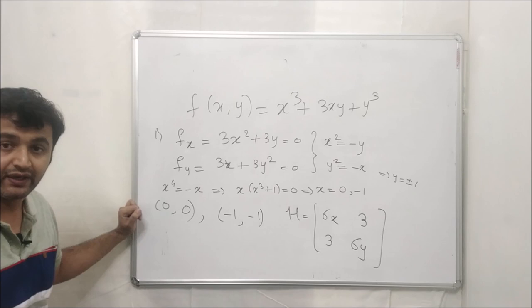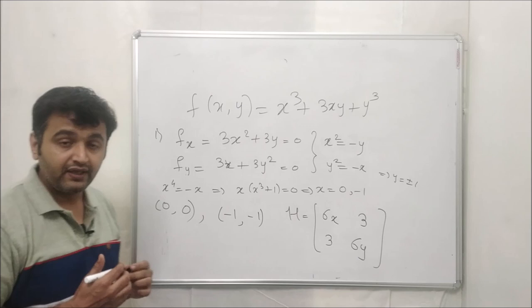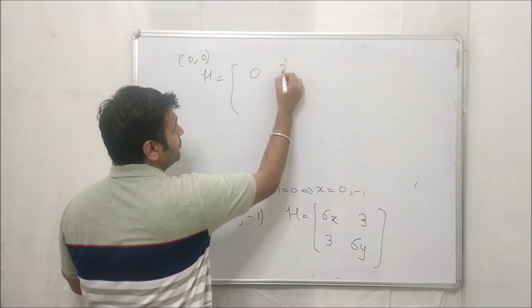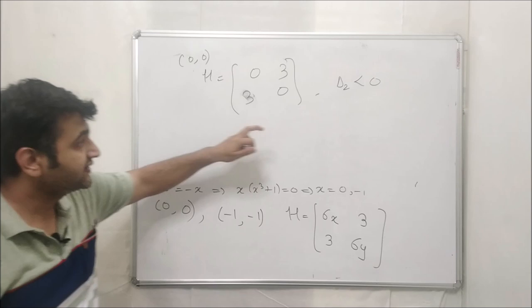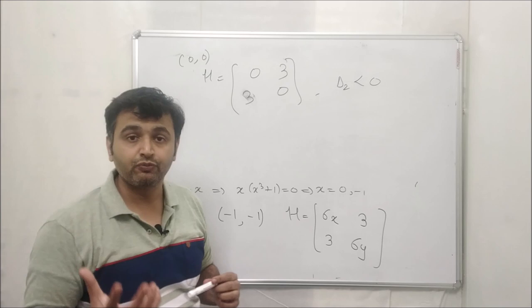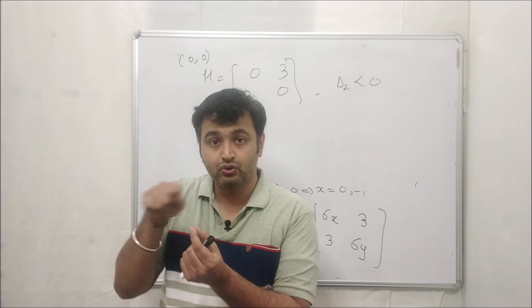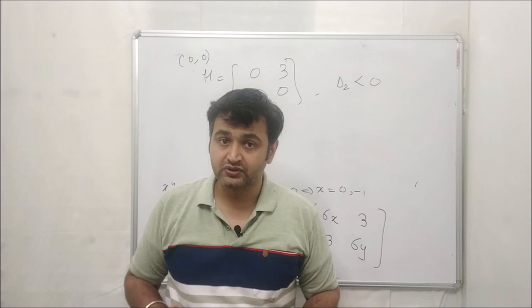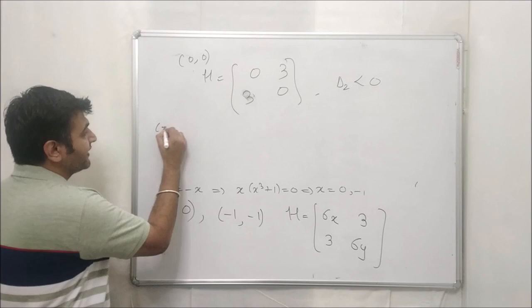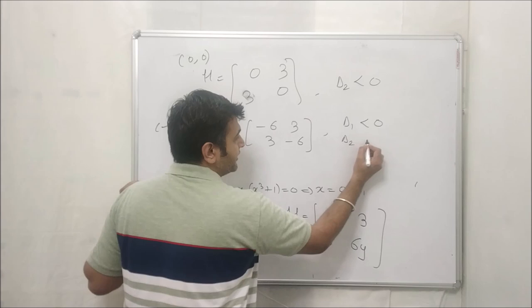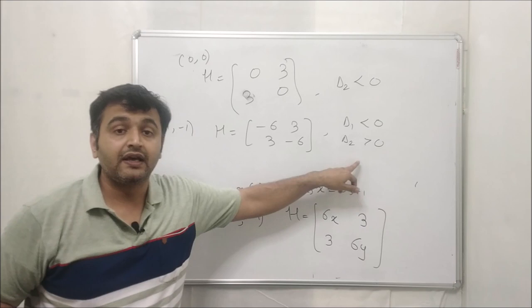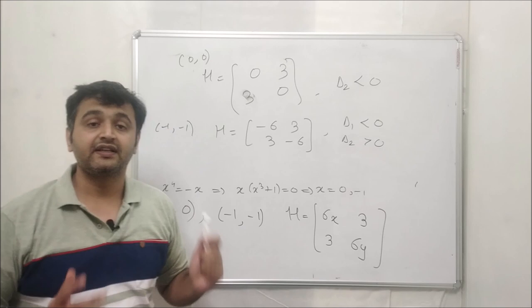The Hessian matrix is [6x, 3; 3, 6y]. At (0, 0): Hessian = [0, 3; 3, 0], so Δ₂ = 0 − 9 = −9 < 0, which means saddle point at (0, 0). At (−1, −1): Hessian = [−6, 3; 3, −6], so Δ₁ = −6 < 0 and Δ₂ = 36 − 9 = 27 > 0. Negative, positive pattern means local maxima at (−1, −1).